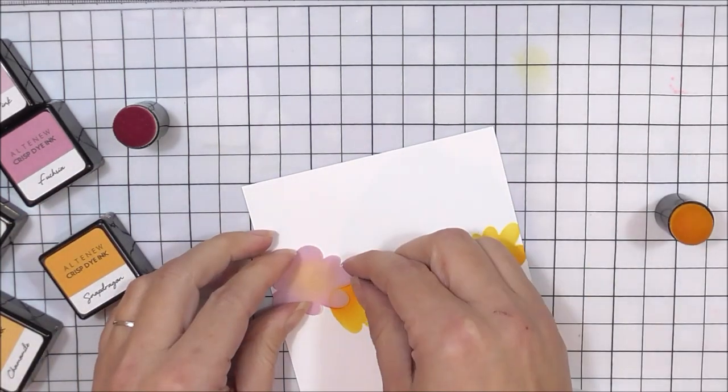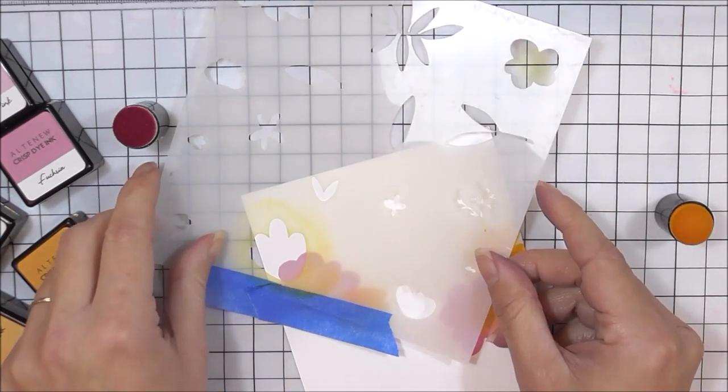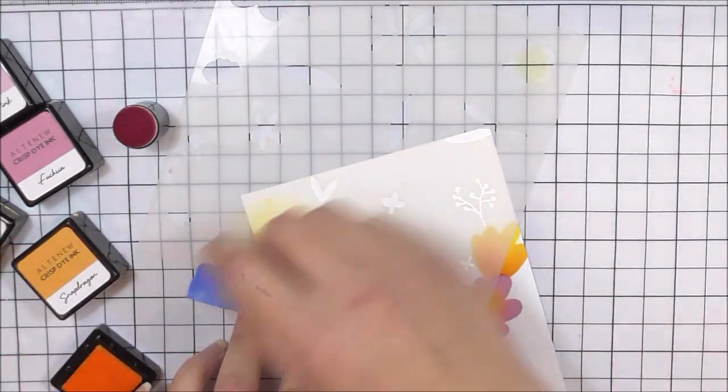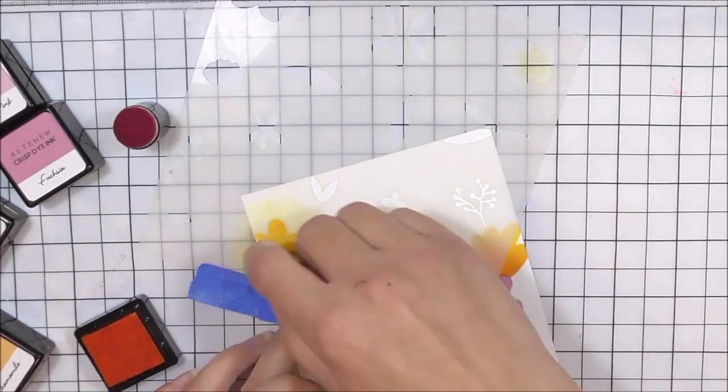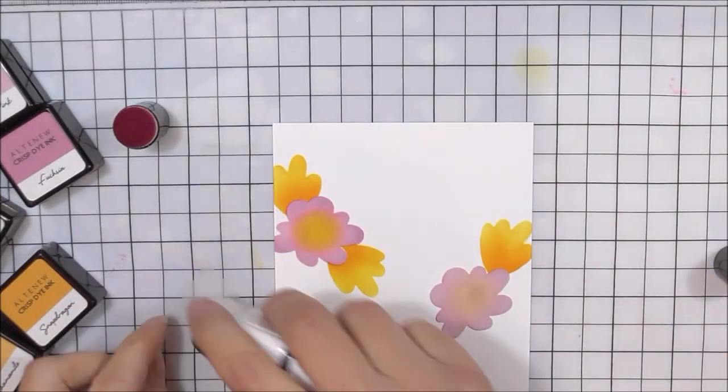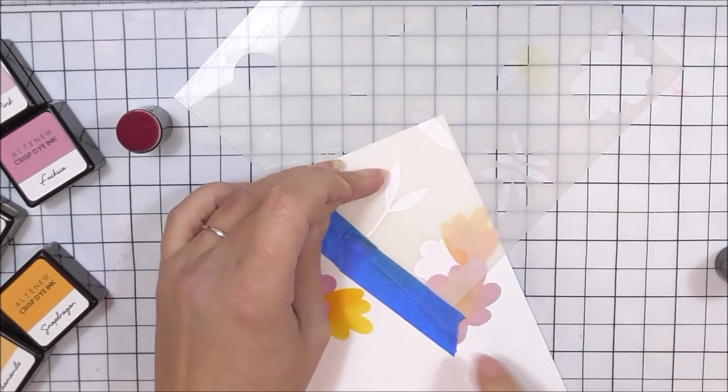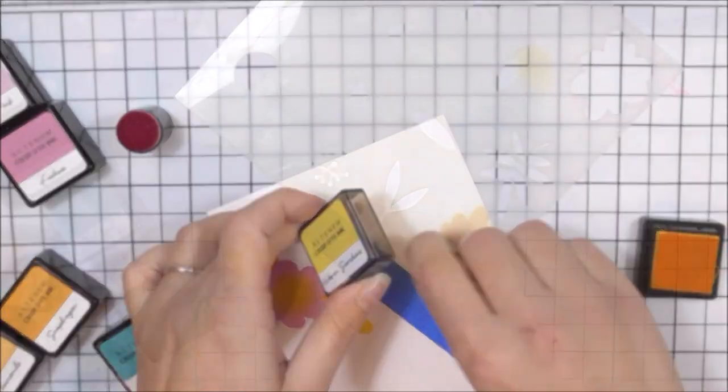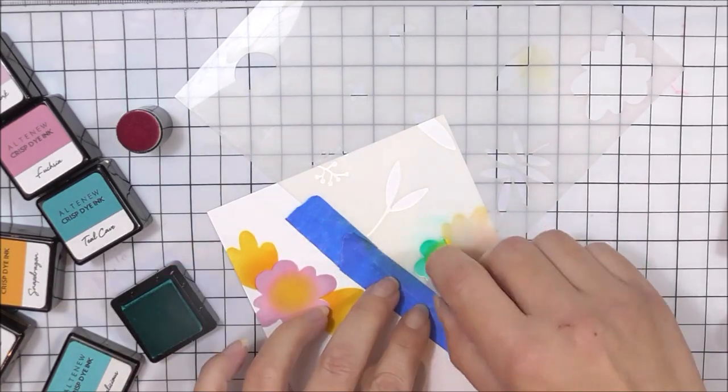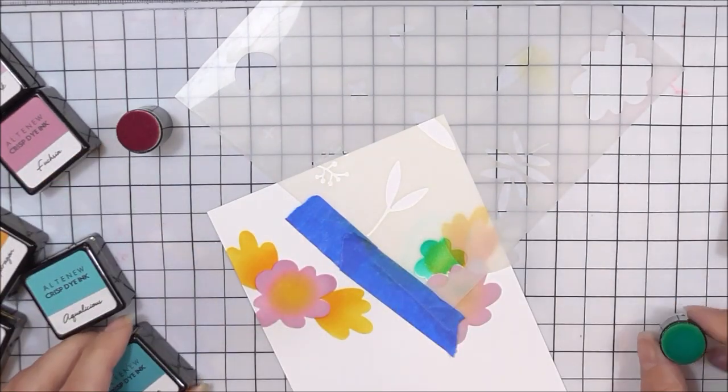Again I've moved the mask stencil onto the larger flower on the other side and then I'm going to pop in a couple more of the little tulip flowers again in the same colors. Once I've done that I'm then going to remove the mask stencil again, pop the masks into place over the two flowers that I have there, and then I'm going to go for a little smaller flower.